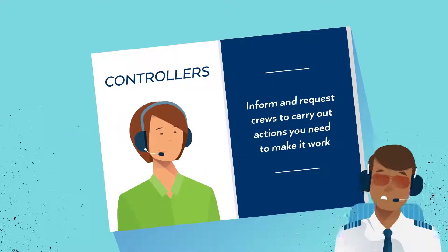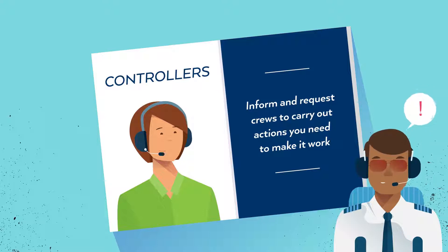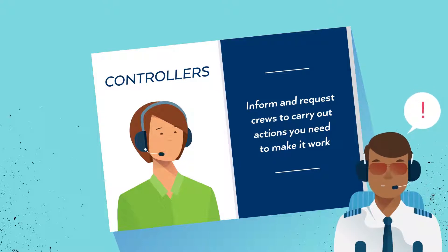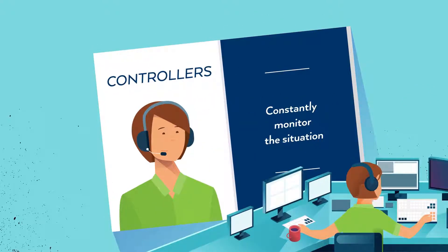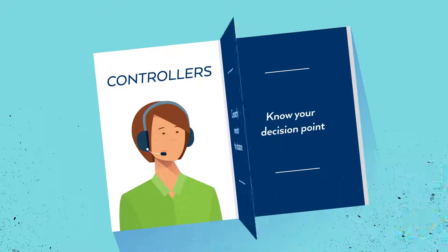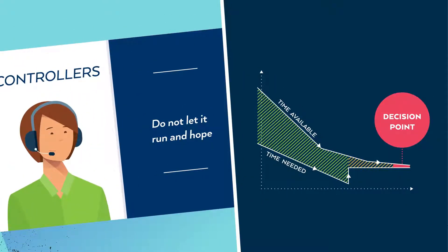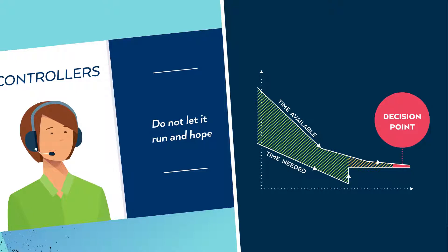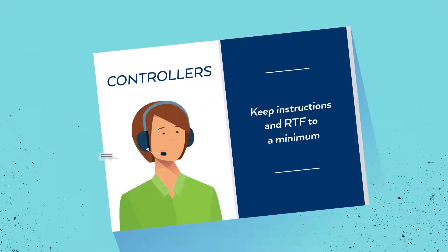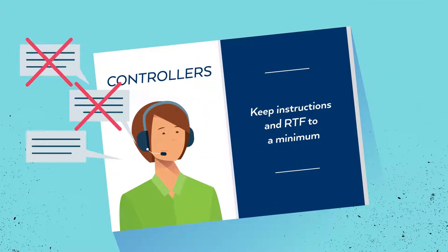Controllers: Inform crews of any requirement that your plan depends on, such as vacating at a particular exit. Constantly monitor the situation and keep crews informed. Know your decision point — do not let it run in hope. Lastly, keep ATC instructions and RTF to a minimum.